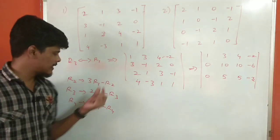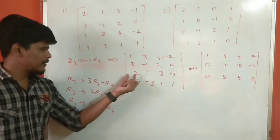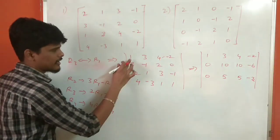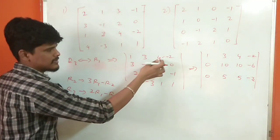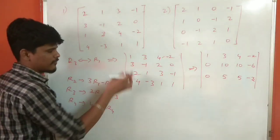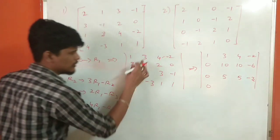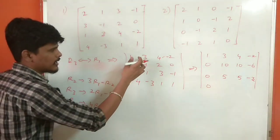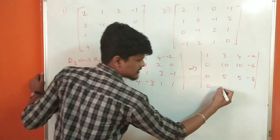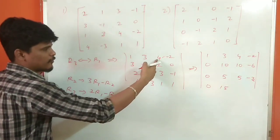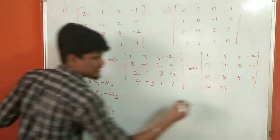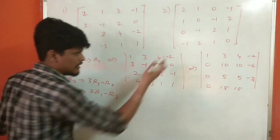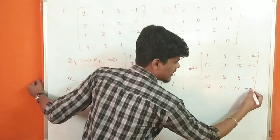For 2R1: we have minus 2. It is equal to R3 and R4. If we multiply 4 by 4: 4, 12, 16, minus 8. If we do minus 4, we get 0. Then 12 minus 1 gives minus half minus 3. Multiplying by minus 1 and from minus 8, we get minus 9.